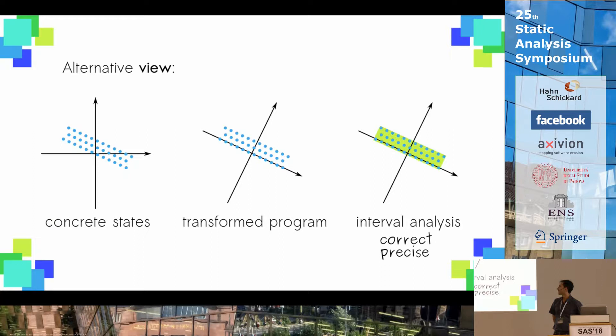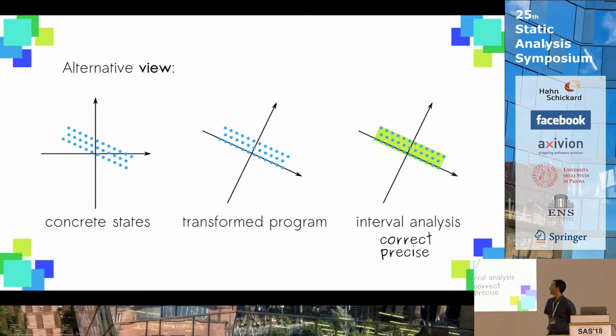It is also nice to see that this approach has a dual point of view — instead of transforming our abstraction, in fact we are also transforming the program. That is, if you have the same example as before, instead of transforming our interval, we can transform our reference system, which is the same as transforming a program, so that our interval analysis in this new reference system is much more precise.